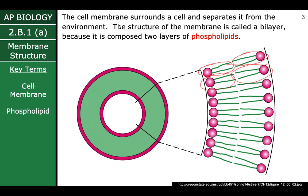The reason this is called a bilayer is because it's made up of two parts — two layers of those phospholipids. Sometimes you'll see it referred to as a phospholipid bilayer, as well as a cell membrane. It's saying the same thing for the purposes of this class.